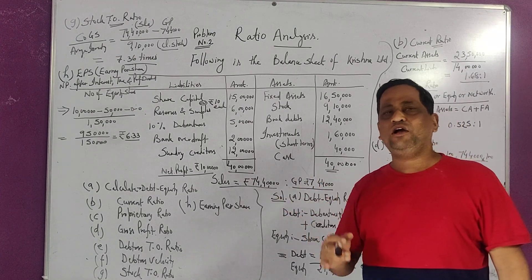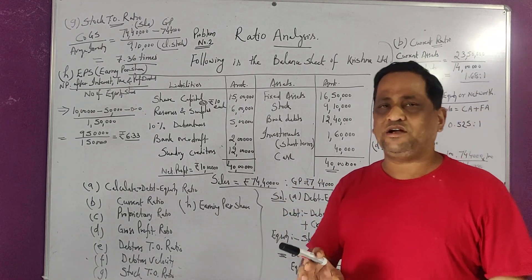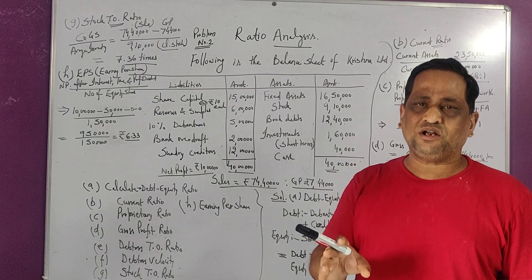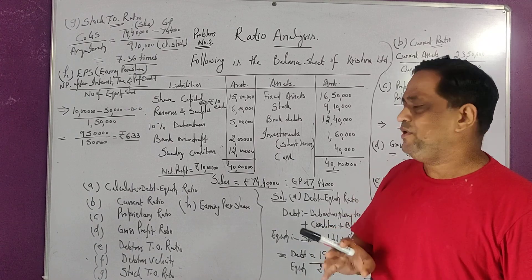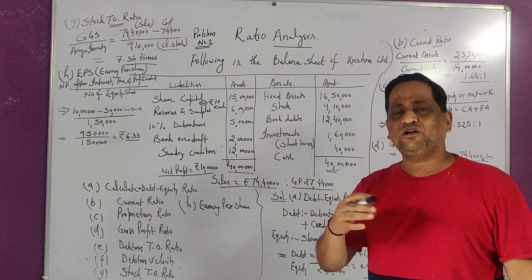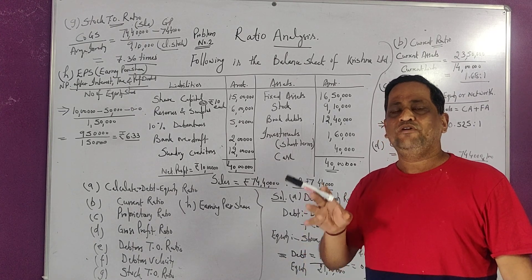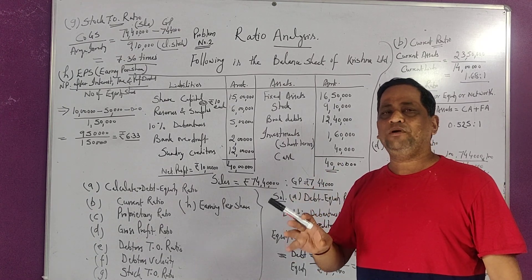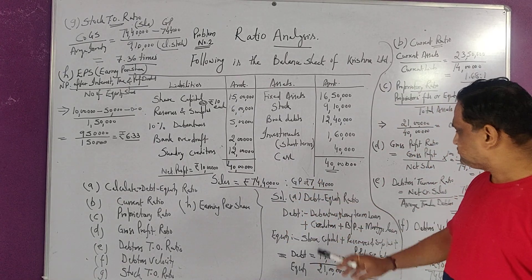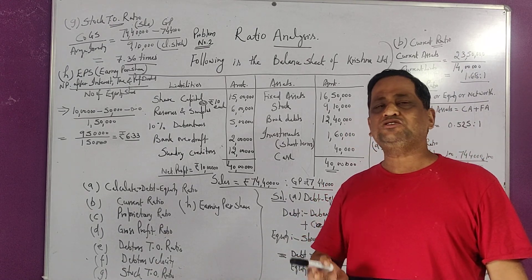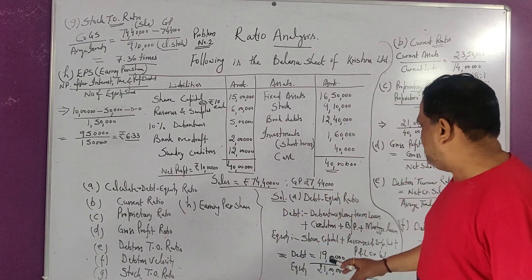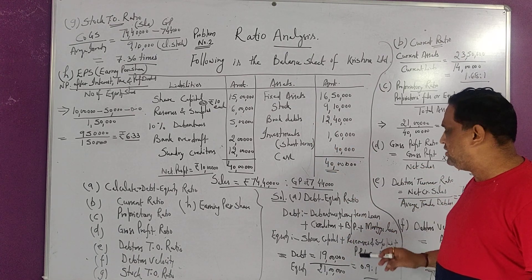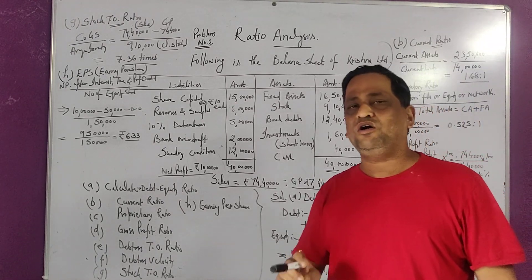So the first is debt-equity ratio — that means debt divided by equity. Whenever we are talking about debt, that means liabilities, and these liabilities may be short-term or long-term. When these are clubbed, the total liabilities are known as debt. Similarly, equity is known as proprietor fund or shareholder funds, which includes equity share capital, preference share capital, reserve and surplus, and profit and loss account credit balance.